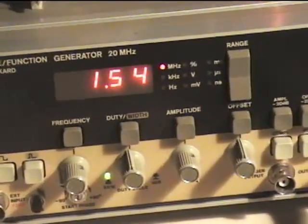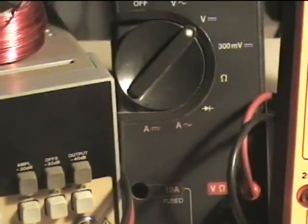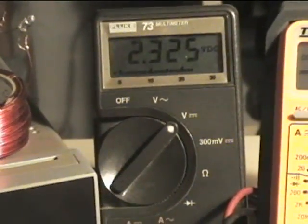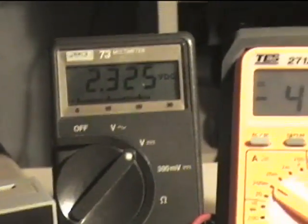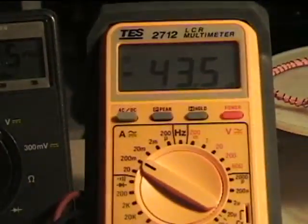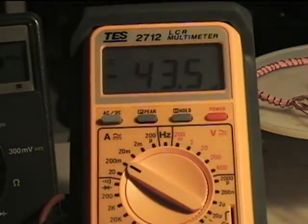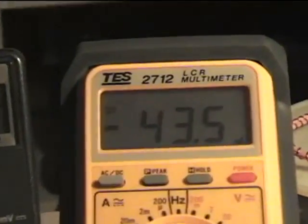Now with the volt meter, what I'm getting is 2.325 V, and the amperage that I'm getting is 43.5 mA, not microamps. These are milliamps.